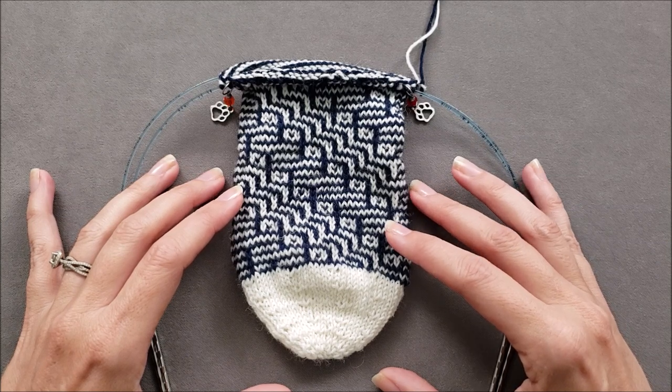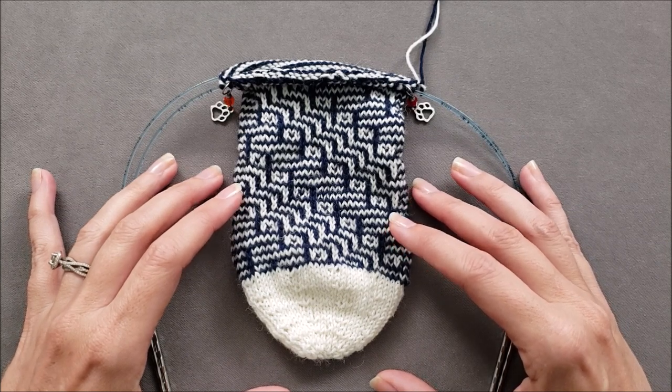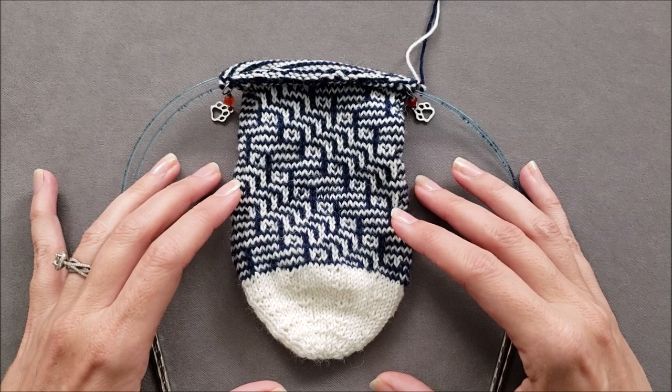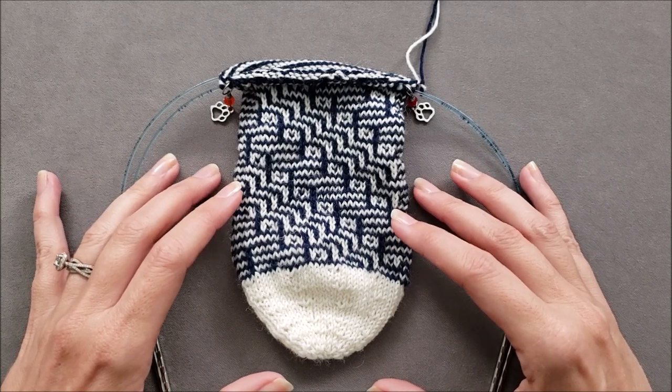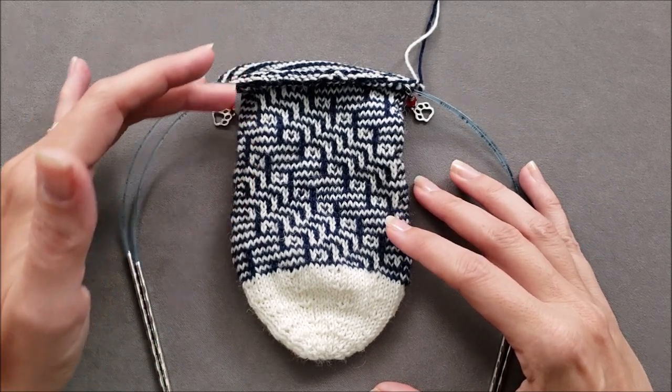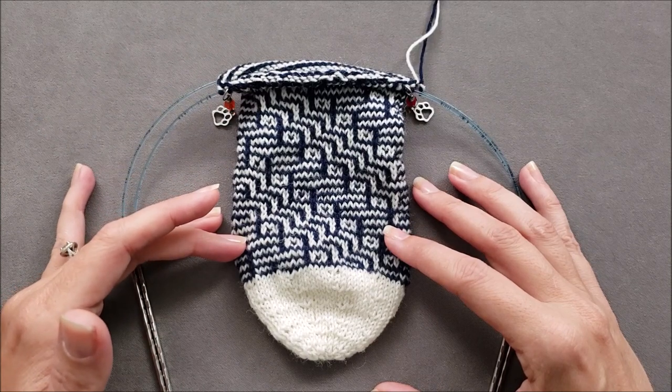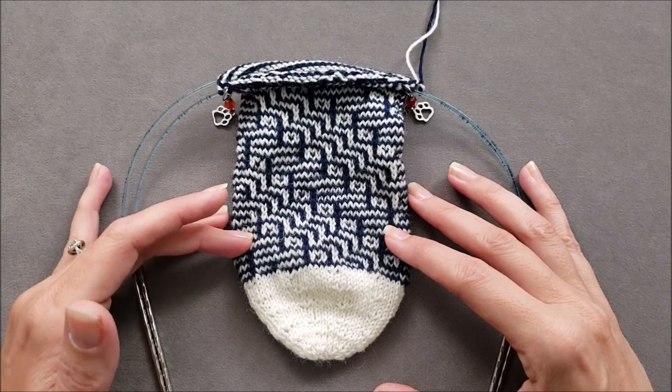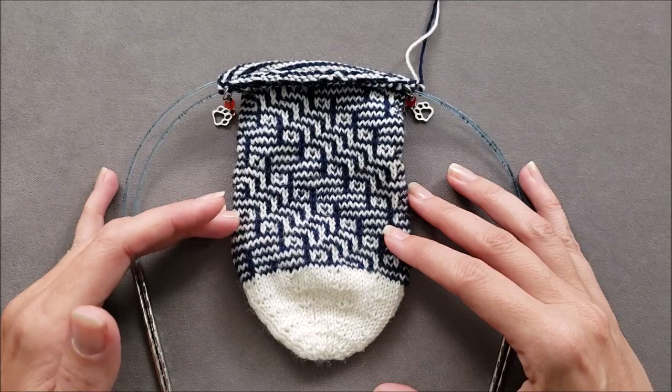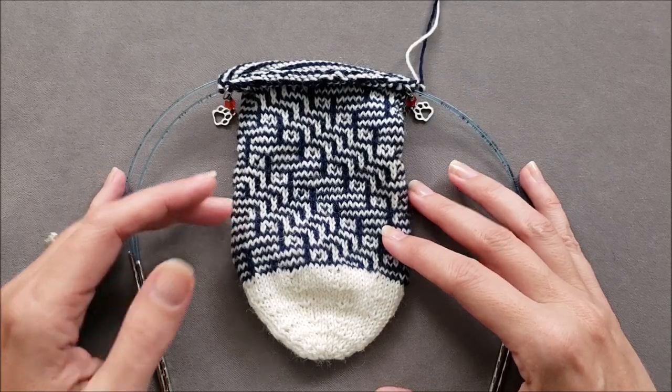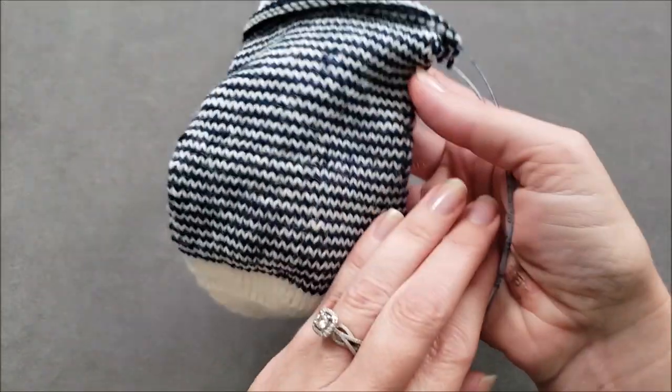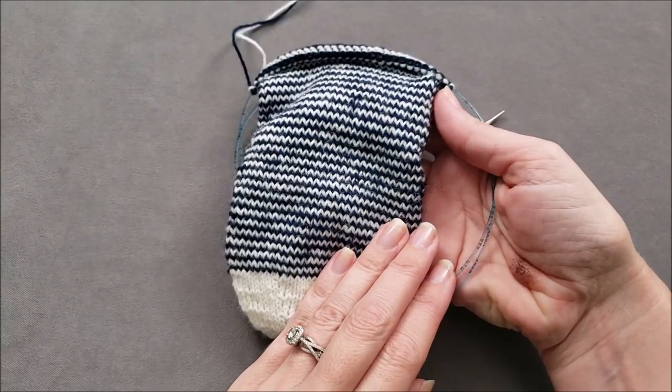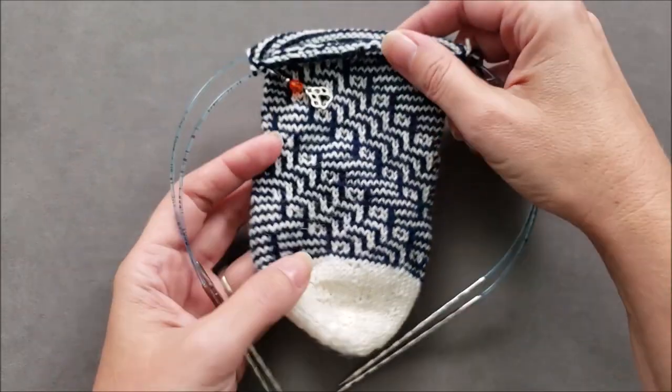mosaic or slip stitch colorwork. I sometimes think of mosaic knitting as cheater colorwork because it can be used to create these very complicated looking motifs, but unlike fair isle knitting, you're only working with one color of yarn at a time. So if you can knit stripes, you can do mosaic knitting.